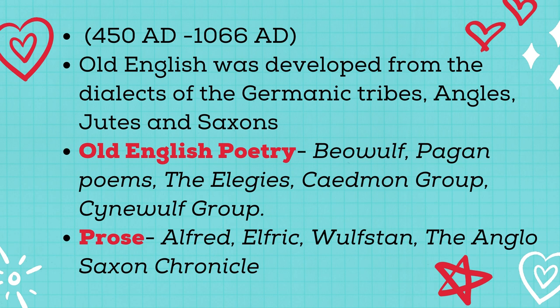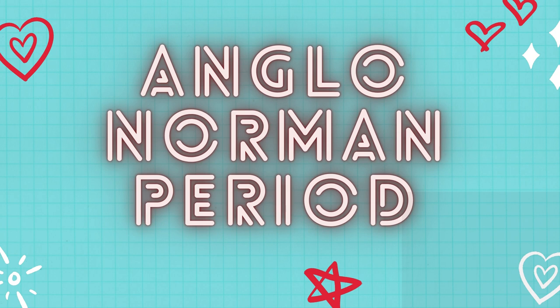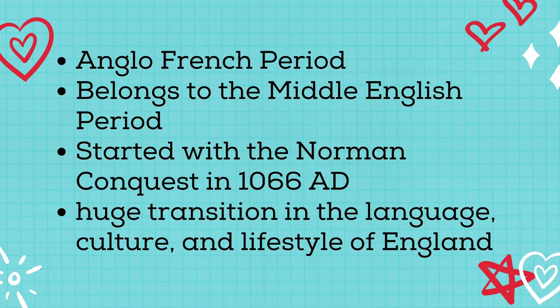The prose pieces associated with the Old English period are Alfred, Aelfric, Wulfstan, and the Anglo-Saxon Chronicle. Next we have the Anglo-Norman period, otherwise called the Anglo-French period. It belongs to the Middle English period and started with the Norman Conquest in 1066 AD.